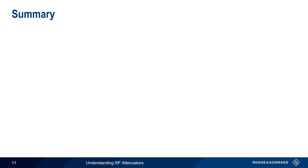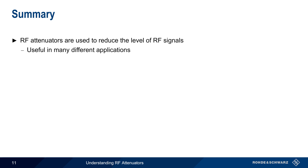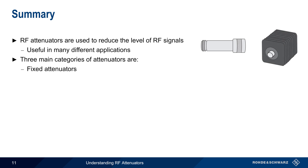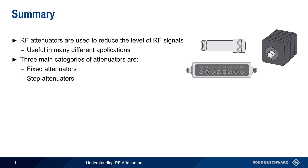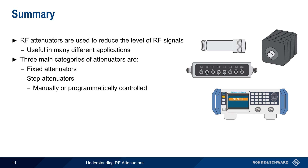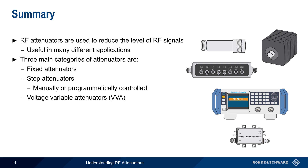Let's end with a brief summary. Radiofrequency attenuators are devices used to reduce the level of radiofrequency signals, which is useful in a wide variety of applications including test and measurement. There are three main types: fixed attenuators, which provide a roughly constant level of attenuation over a given frequency range; step attenuators, which allow attenuation to be controlled in defined steps, usually by switching a set of cascaded attenuators in or out, and which may be manually or programmatically controlled; and voltage variable attenuators, in which the level of attenuation is configured by means of an analog input voltage.